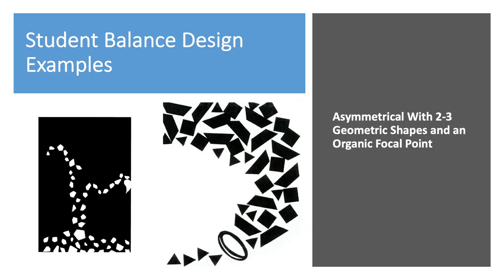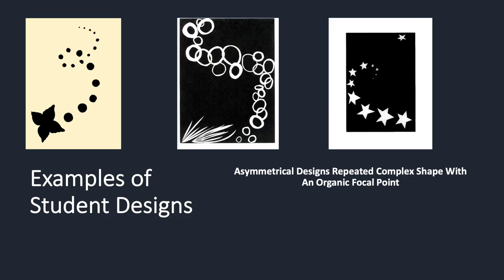Here are some examples of what students did with this project. For the first asymmetrical design with two to three geometric shapes and an organic focal point, one design looks kind of like a tree with the repeated form and then the focal point over to the right, while another has a beautiful sweeping form going up almost like a horn shape to the top left. For the second asymmetrical design with the repeated complex shape, the most on-brief one has stars with a star at the top right and beautiful use of negative space. Another has swirling diagonal circles leading to the focal point of a butterfly, and another shows a beautiful feather with bubbles swirling in a diagonal pattern up to the top left.